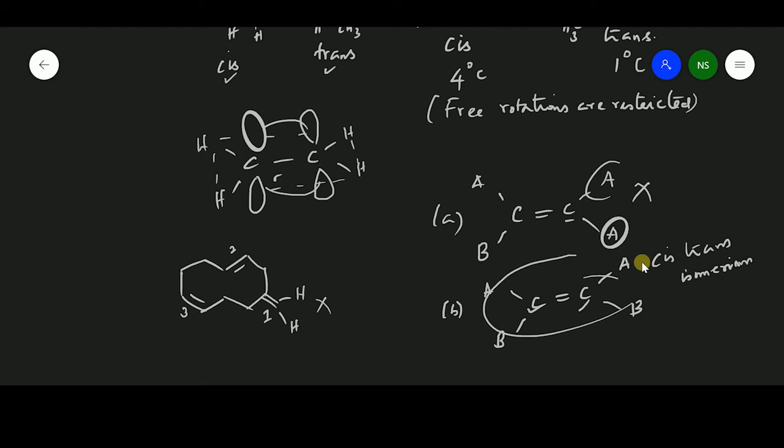Let's move on to the second part where you can find hydrogen over here and here. This is going to be trans. What about this one? Here you have hydrogen, here you have hydrogen. So this is going to be cis.